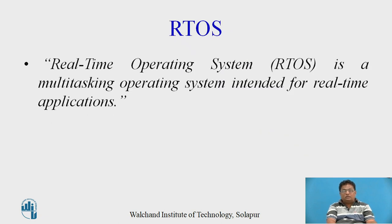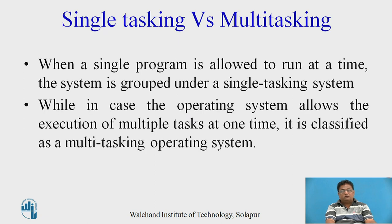Basically, RTOS is the real-time operating system, which is a multi-tasking operating system, and it is mainly designed for real-time applications. When a single program is allowed to run at a time, the system is grouped under a single tasking operating system — meaning only one program can run at the same time. While in multi-tasking, the operating system allows execution of multiple programs or multiple tasks at one time, which is why it is classified as a multi-tasking operating system.